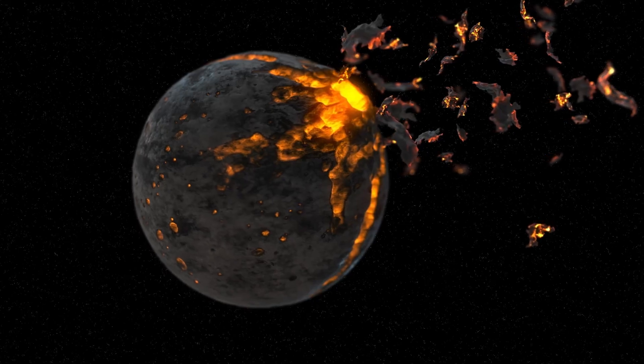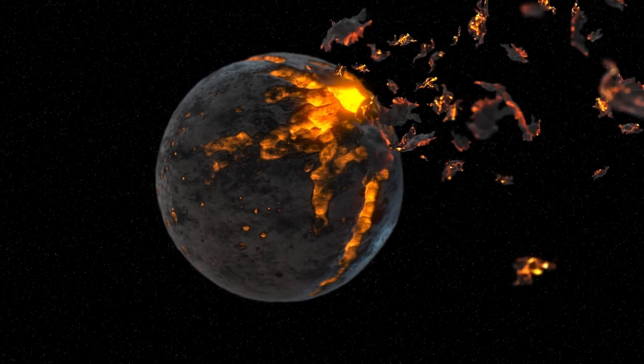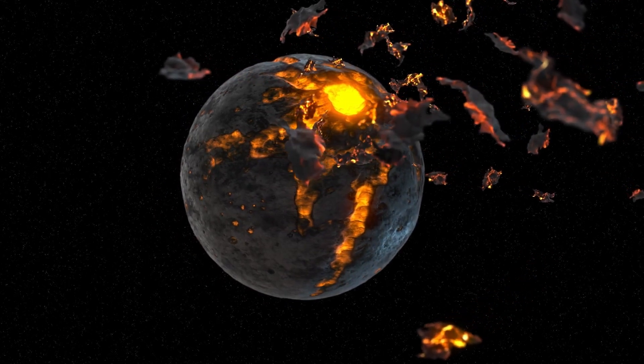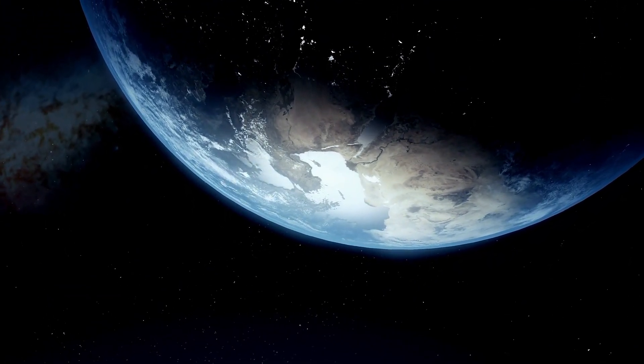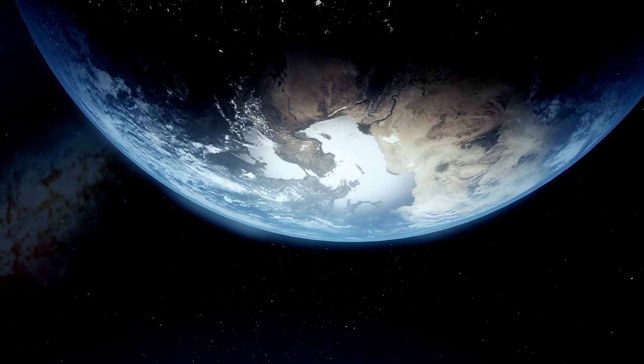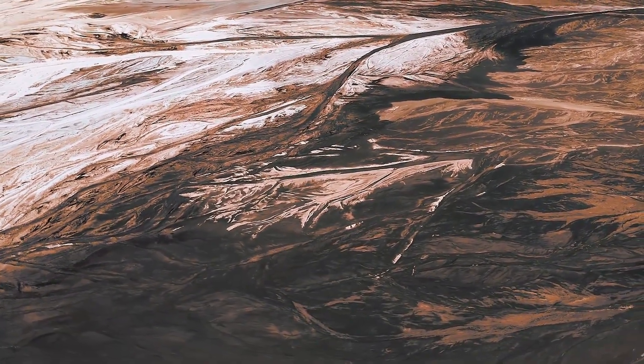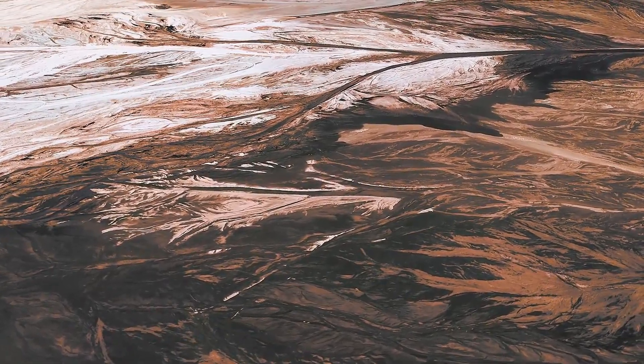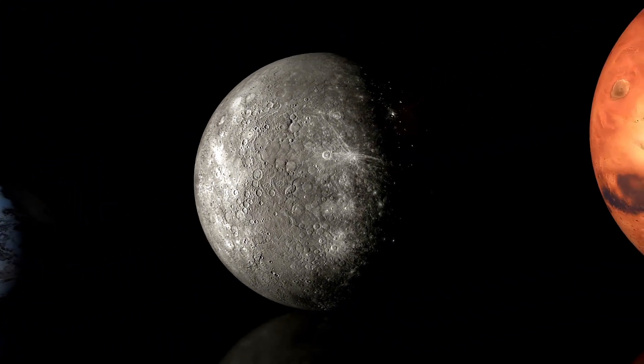This close proximity exposes Proxima b to intense stellar activity, including frequent solar flares and high levels of radiation, making its environment starkly different from Earth's. The discovery of Proxima b was a monumental achievement in exoplanet research. Using the radial velocity method, astronomers detected subtle wobbles in Proxima Centauri's position caused by the gravitational pull of an orbiting planet.